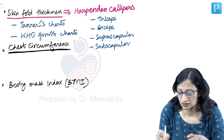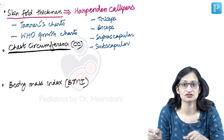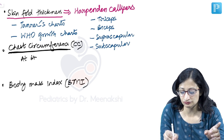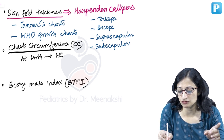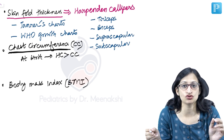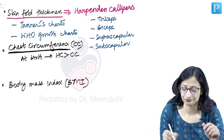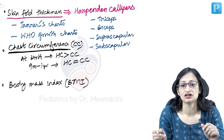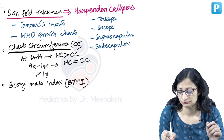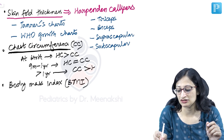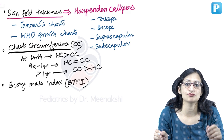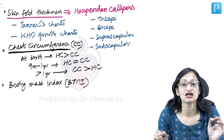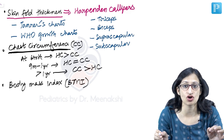Regarding chest circumference: at birth, babies have a large head, and the head circumference is more than the chest circumference — but the difference should not exceed 3 centimeters, otherwise it is abnormal. At about 9 months to 1 year, head circumference becomes equal to chest circumference. Beyond 1 year, the chest circumference should be more than the head circumference; if it is not, it indicates malnutrition.